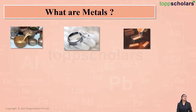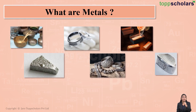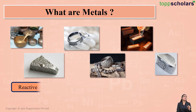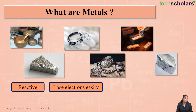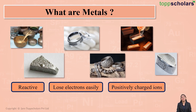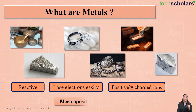Metals are generally used to make utensils, electric wires, and for construction purposes. Metals are generally reactive in nature. We know that metals lose electrons easily, and on losing electrons, metals form positively charged ions. Since metals lose electrons easily and form positively charged ions, metals are called electropositive elements.